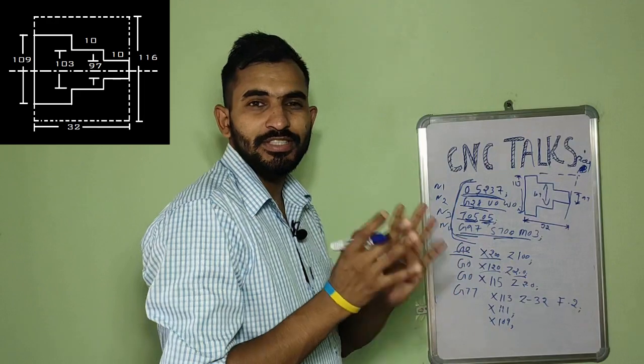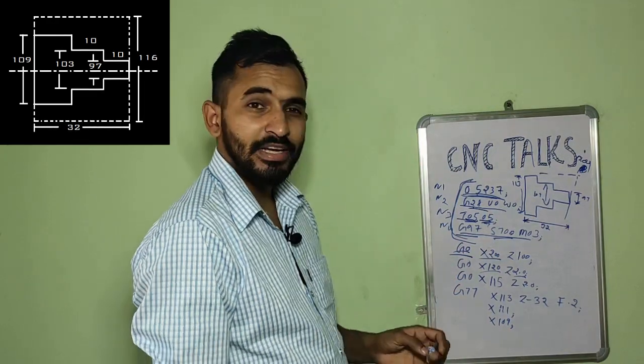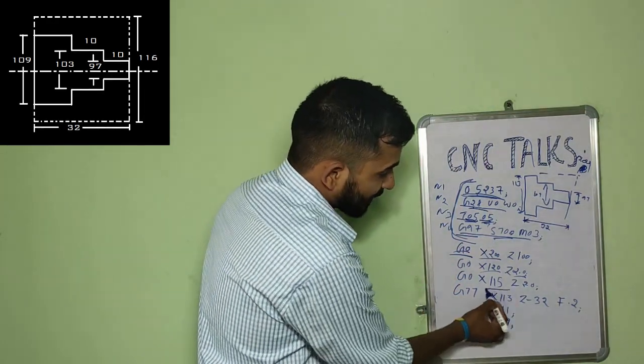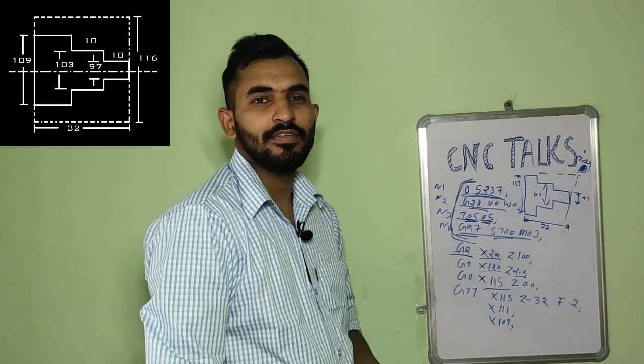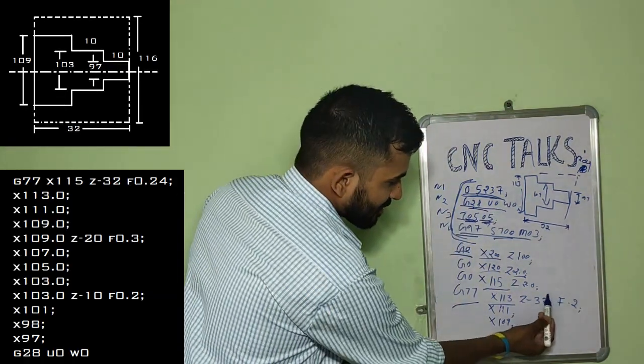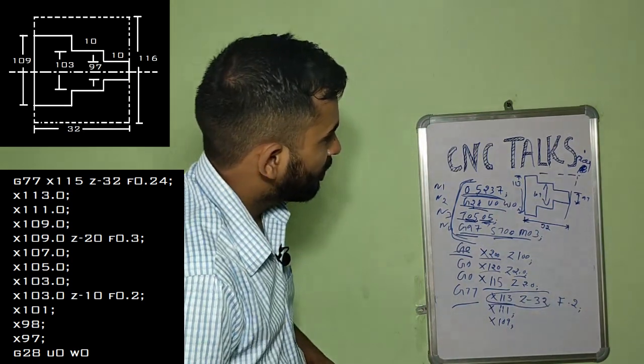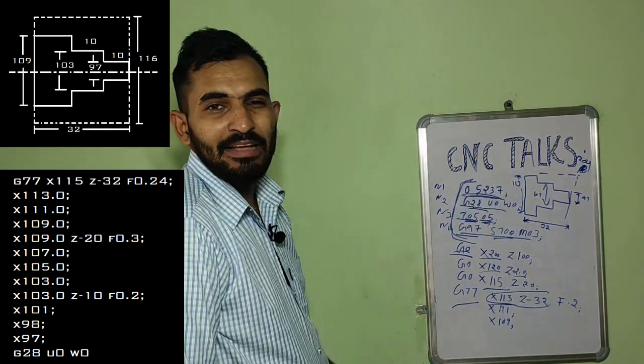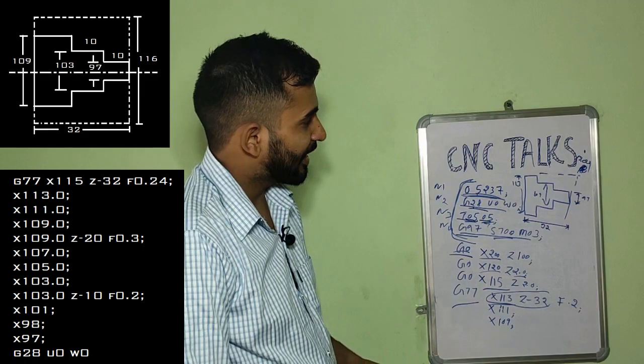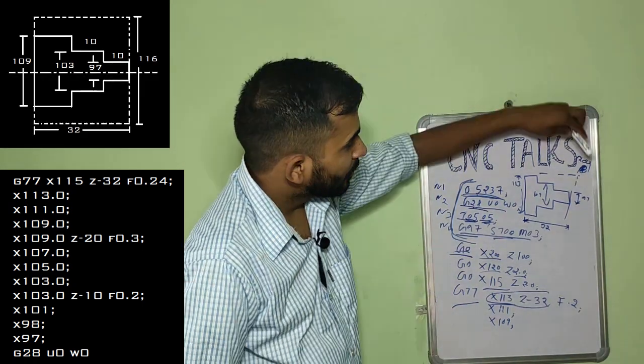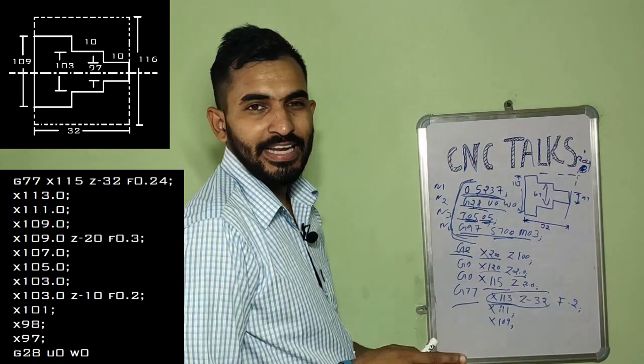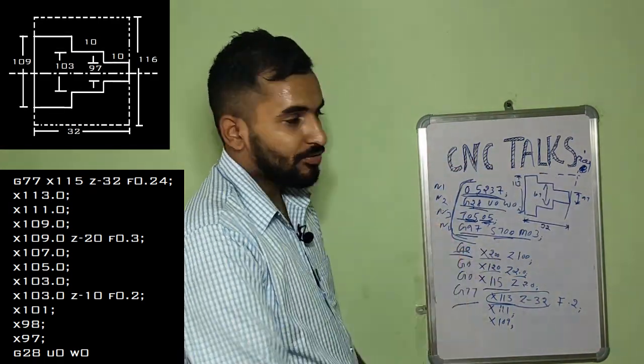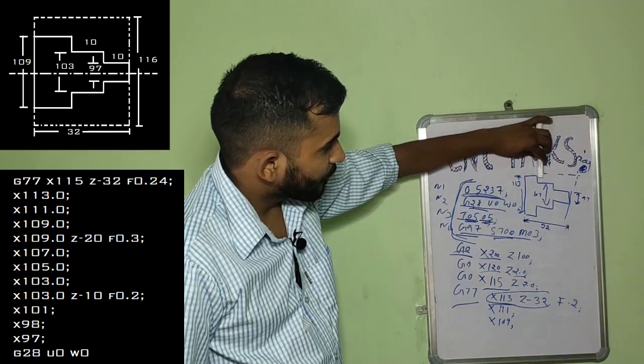Since the diameter of forging part is 116 mm, we'll just start with a first cut of 1 mm. We bring our tool close to X115 and give a 2 mm gap along Z axis. When our program runs this line, 113 mm diameter is maintained and our tool will move from this position maintaining a diameter of 113 mm up to 32 mm. We're going to do this in this direction.